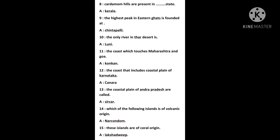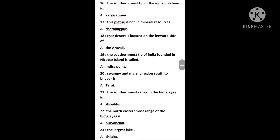The southernmost tip of the Indian plateau is Kanyakumari. This plateau is rich in mineral resources — Chota Nagpur. The Thar Desert is located on the leeward side of the Aravali. The southernmost tip of India, located in Nicobar Island, is called Indira Point.